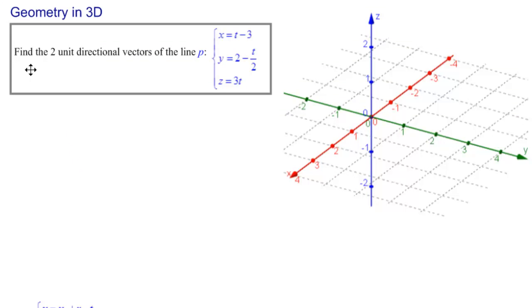In this MathCast, we're to find the two unit directional vectors of the line P. And here is the line P given in parametric form.